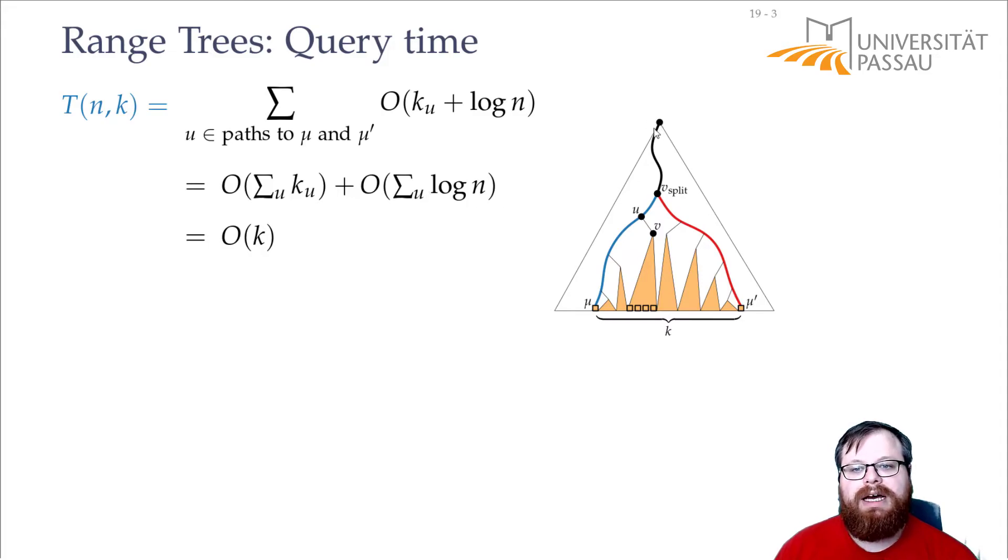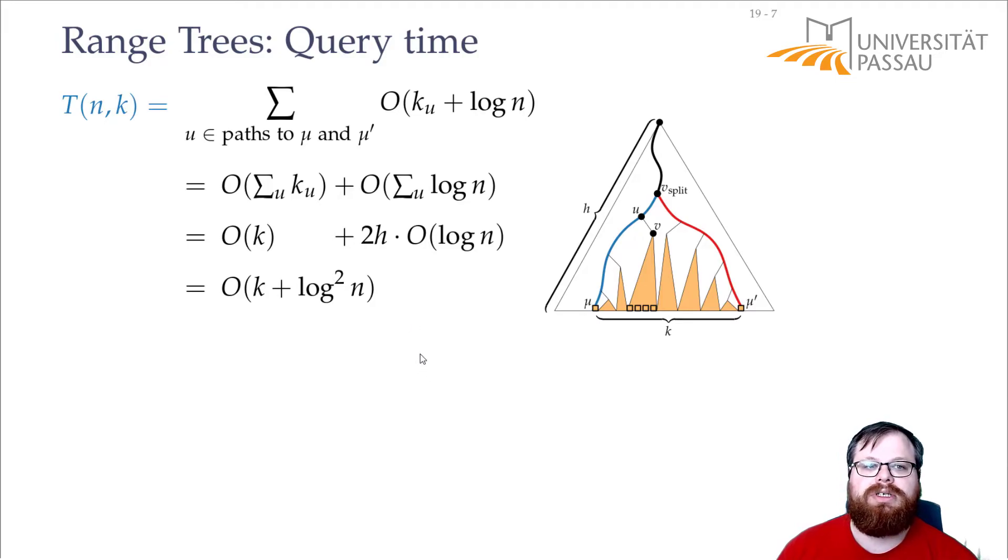And if we sum up over all these log n's, how many of those do we have? We have order of log n on the blue path and order of log n on the red path. So we have order of log n of these u's. That means that this is order of log squared n, or 2h times order of log n. So the total running time now is order of k plus log squared n for the range trees.